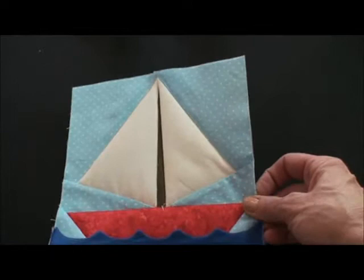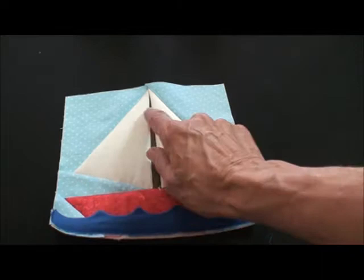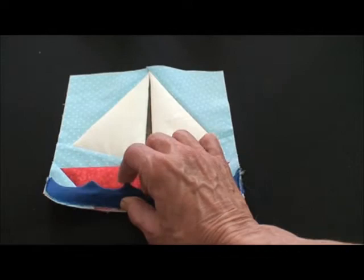I'll show you what that will look like. Now we can see that we've finished. We added batting into the boat as well. We've got this neat little dimension going on. You want to be careful with your iron that you don't flatten it.